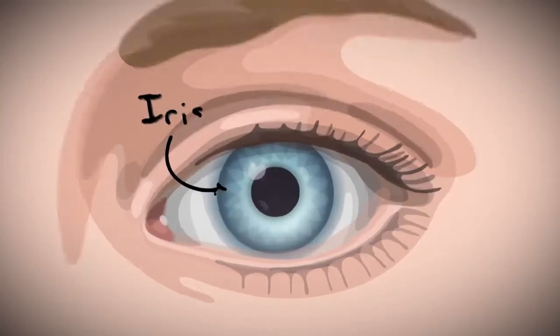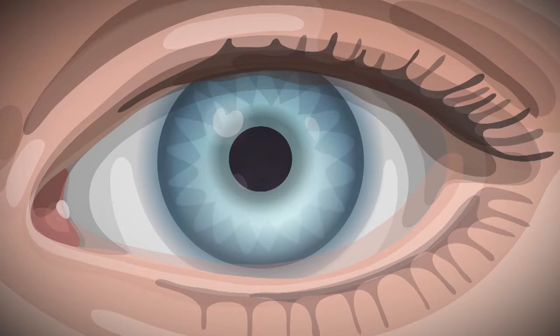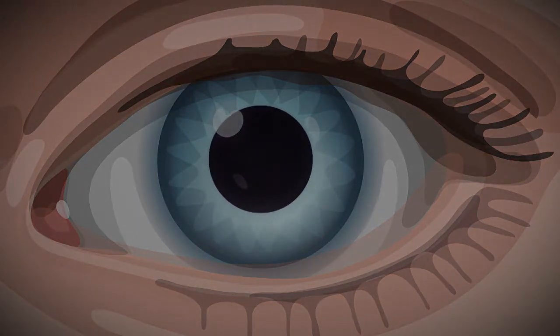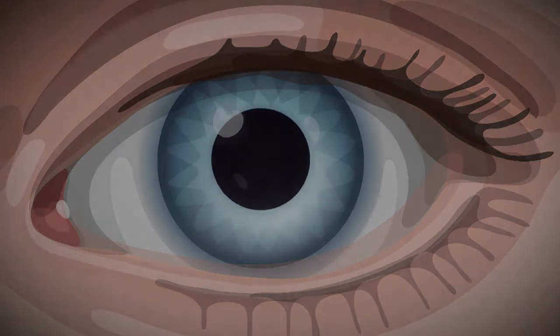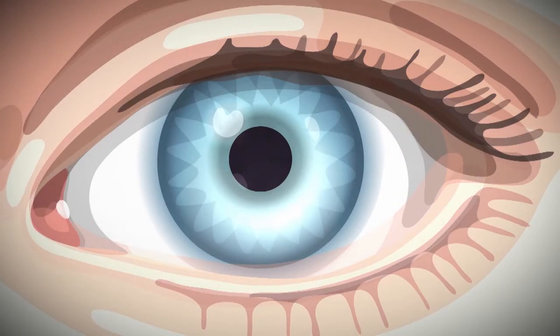The iris widens or shrinks to adjust to different environments. In dark environments, it widens to let in more light. In bright environments, it shrinks to protect your eyes from overexposure.